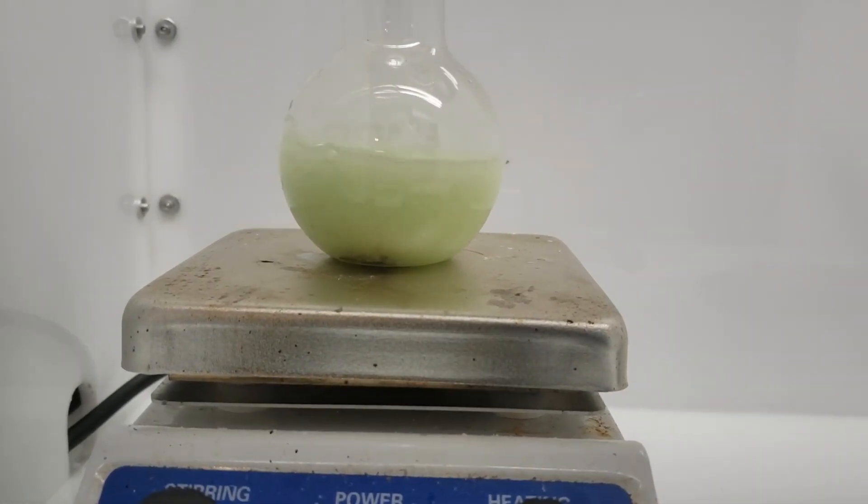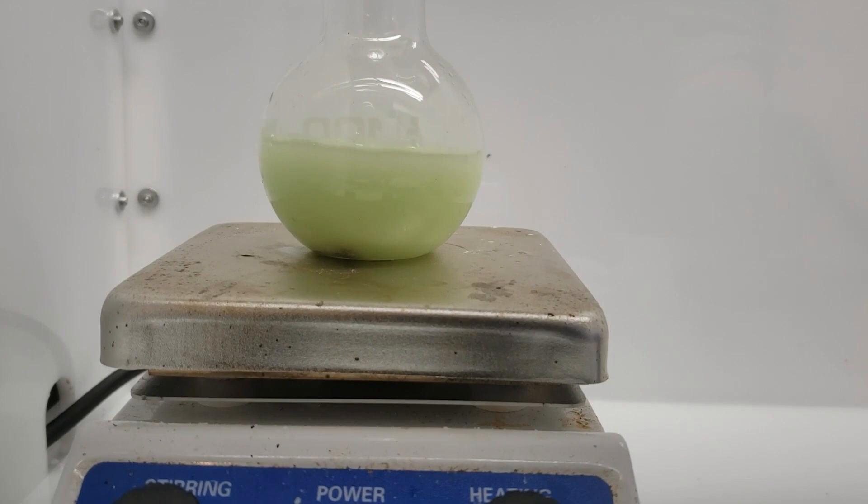An immediate and violent reaction ensues, releasing a lot of heat and bubbles of hydrogen. A slight green color also emerges. This is the color of Praseodymium chloride, which is formed in this reaction.